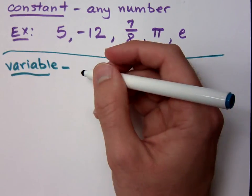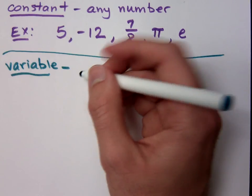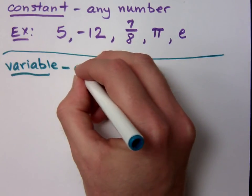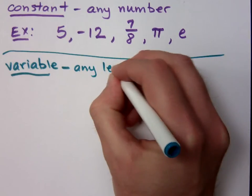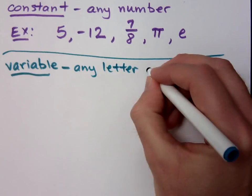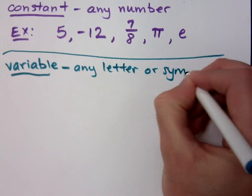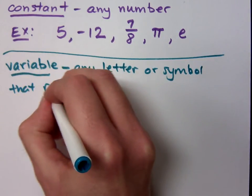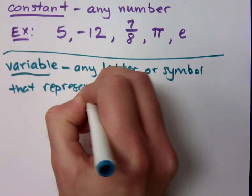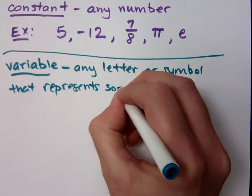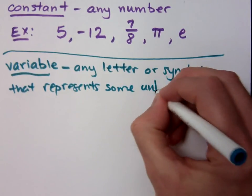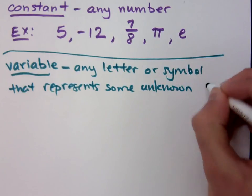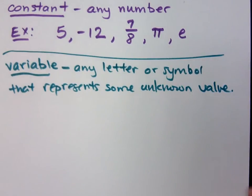Variable. Does anybody know what a variable is? Love the blank faces. Well, it means that it can change, right, and it's any letter or symbol that represents some unknown value. It's any letter or symbol that represents an unknown value. Okay, it varies. It can change.